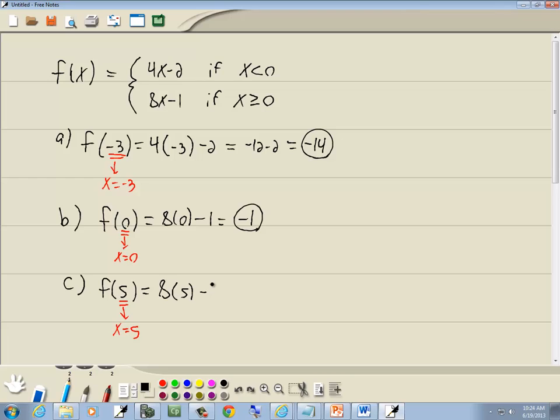So I've got 8 times 5 minus 1, which gives us 40 minus 1, or 39. And those are our answers.